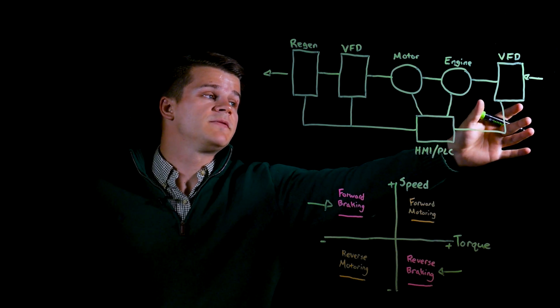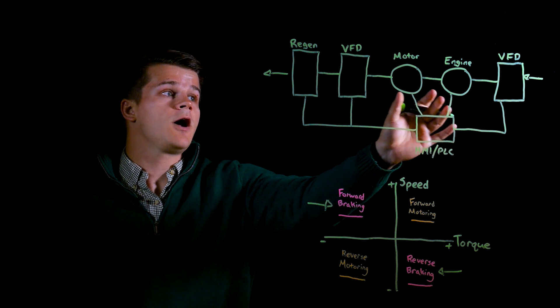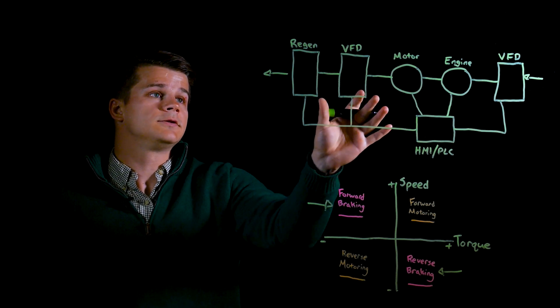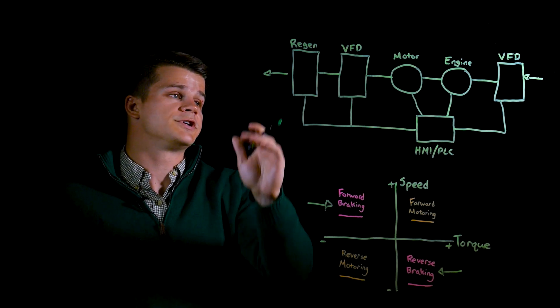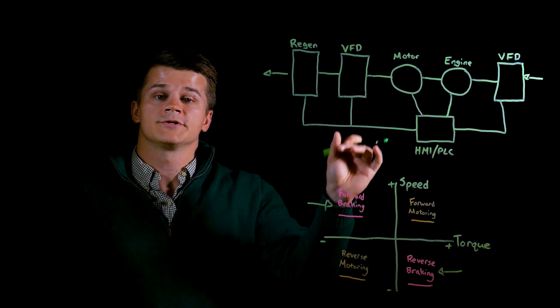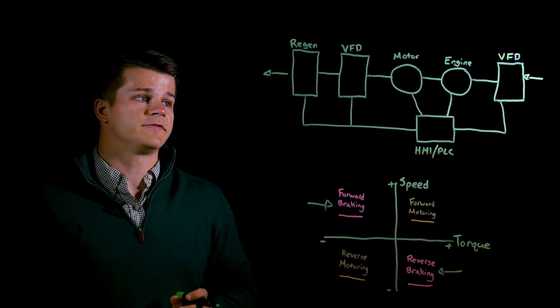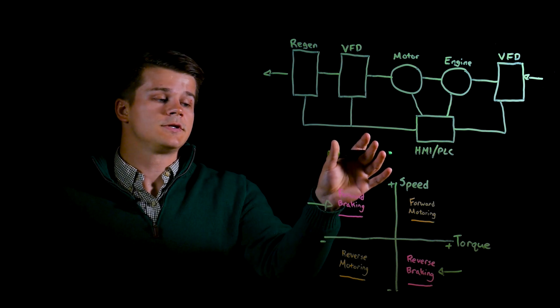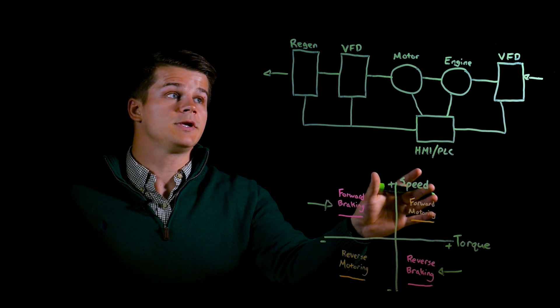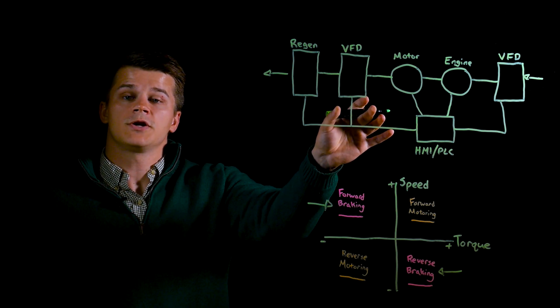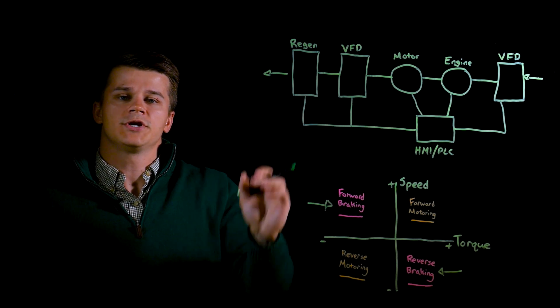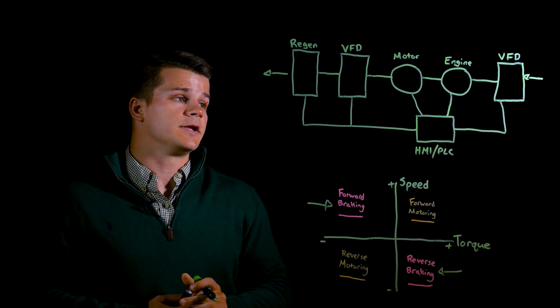The test engine is brought up to speed by a VFD and is then coupled to a load motor and a load side drive or regen unit. The load motor applies a variable load to the engine using the torque control of the VFD. Because the applied torque is in the opposite direction of the speed, this VFD is always generating energy, thus the regen unit can be used to save this money and energy.